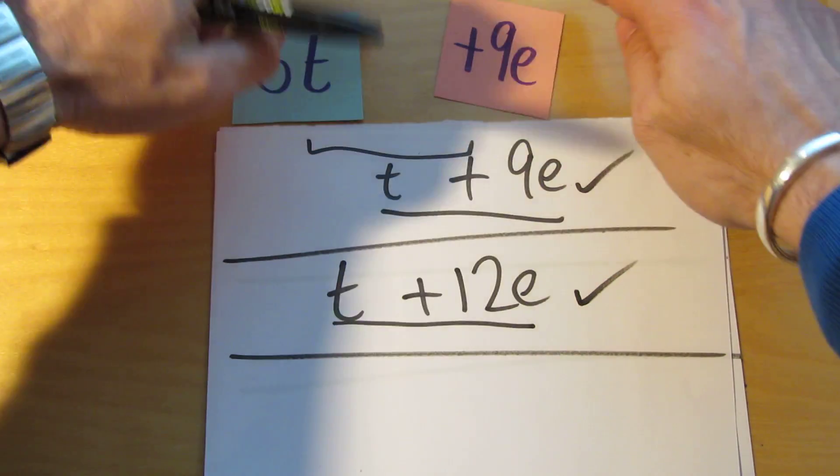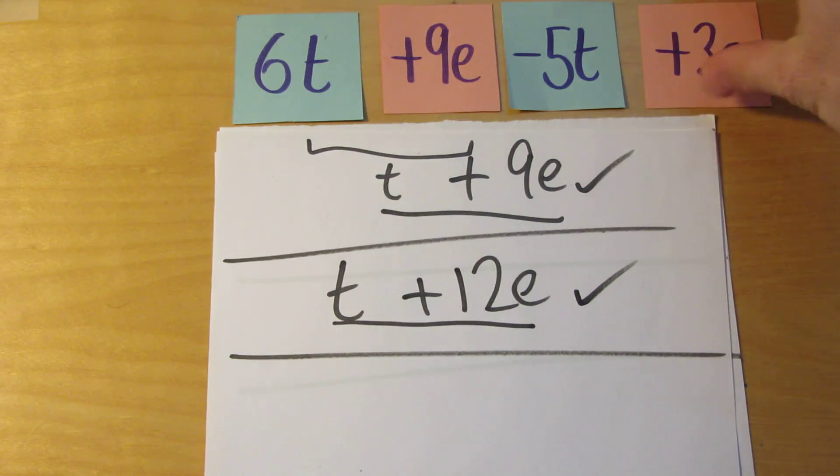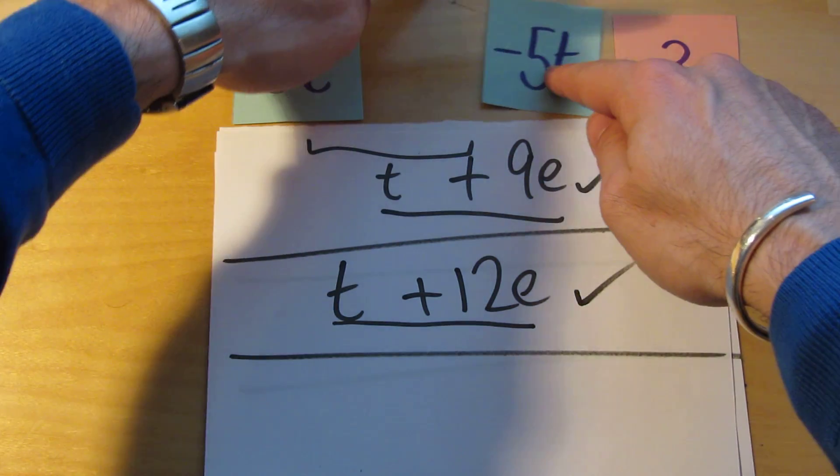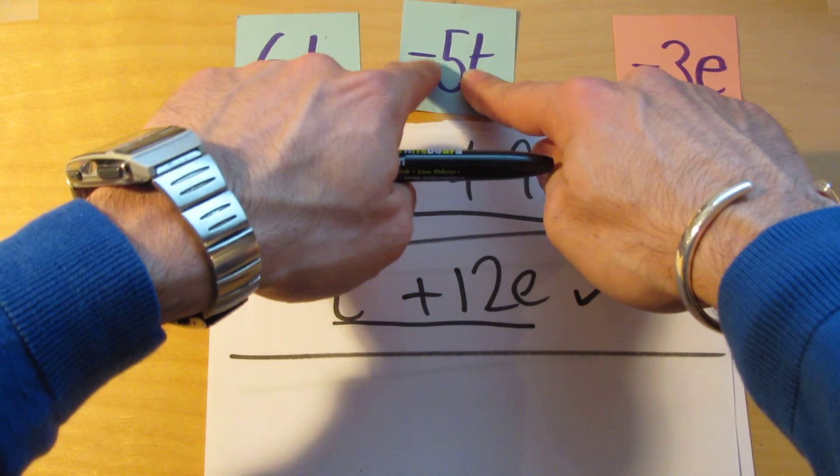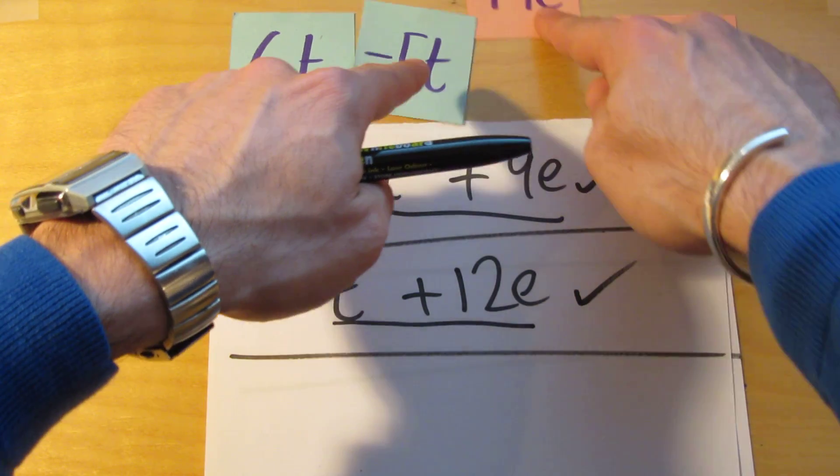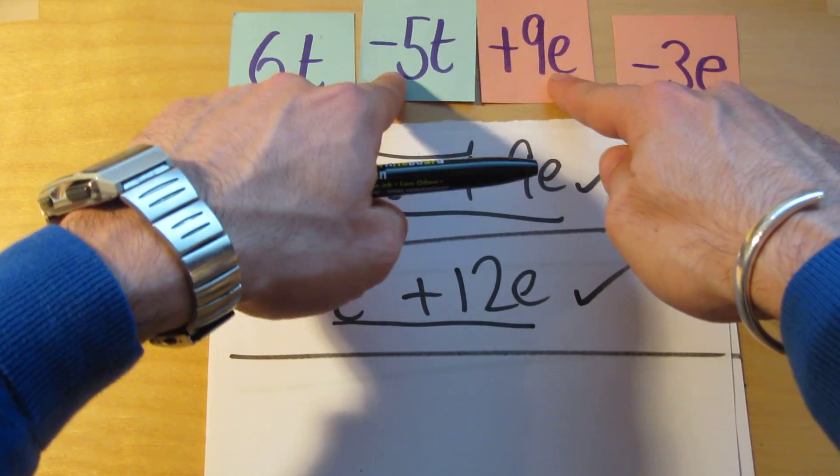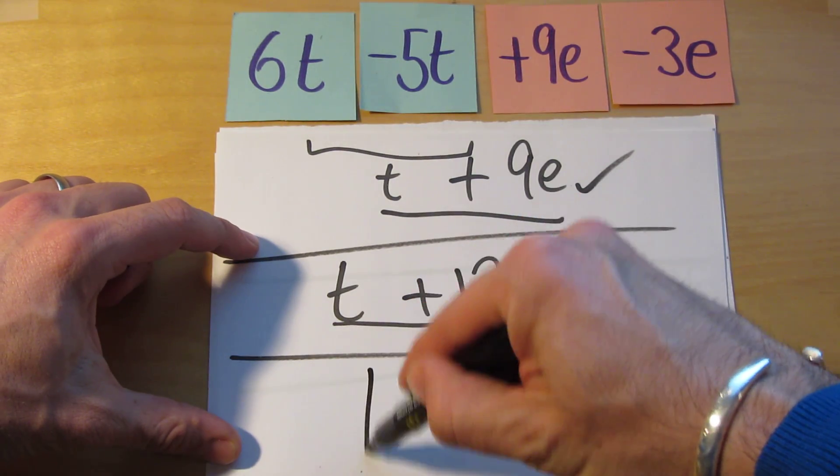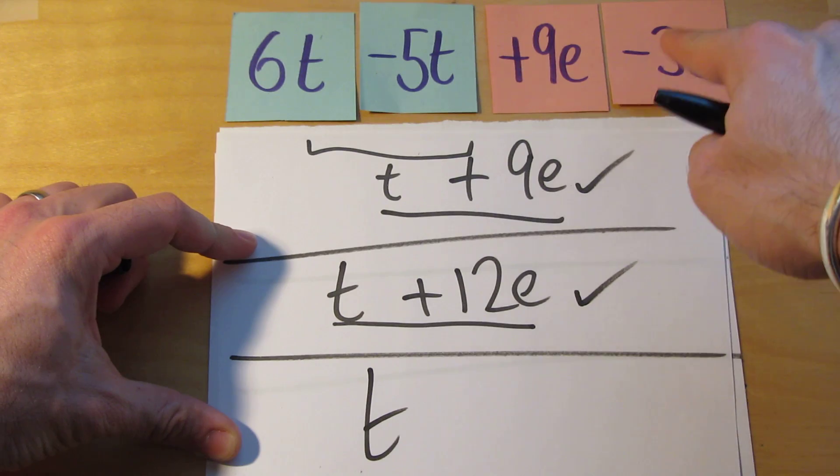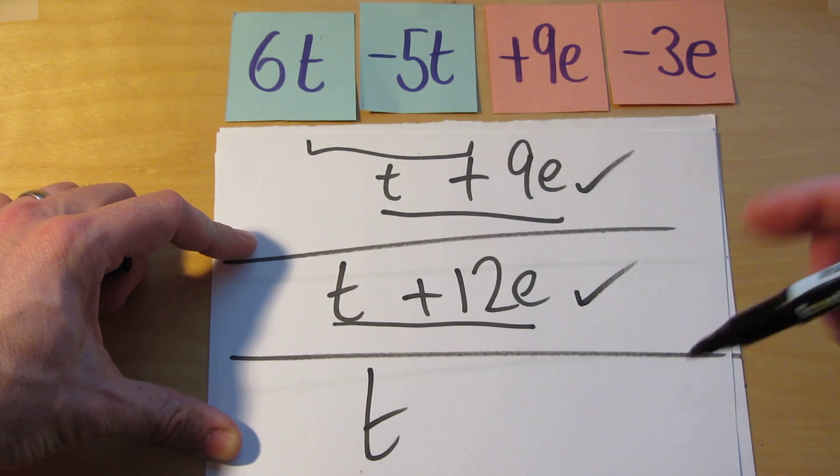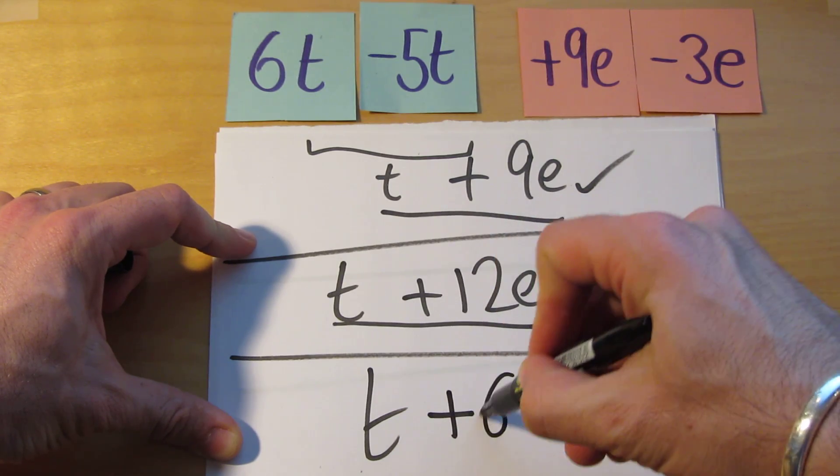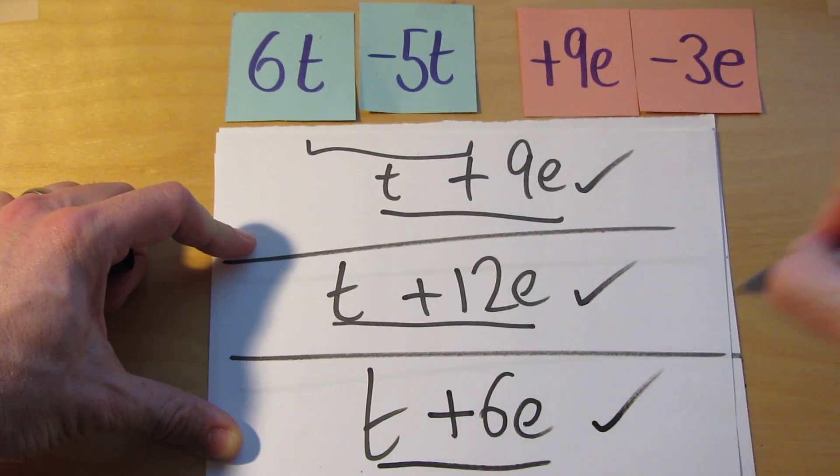All right and let's reset that. Change that very slightly just so we get the chance to practice it again with something similar. Okay collect the like terms. Get the t's together and watch this sign to the left of that goes with it. The plus sign to the left of the 9e goes with it. Right now 6t take away 5t. We've done that a few times. That was t. And then we've got add 9e take away 3e this time. And that bit alone simplifies to add 6e. That's it. Done.